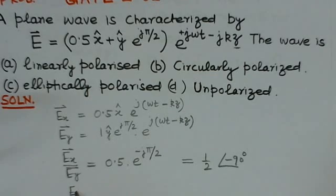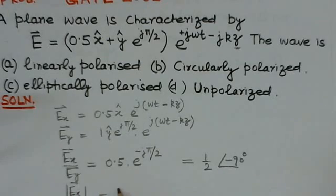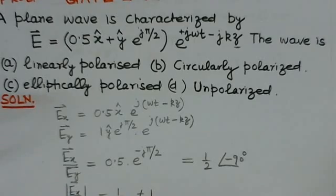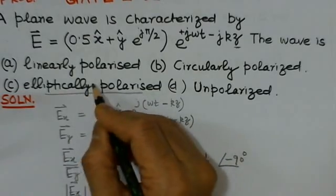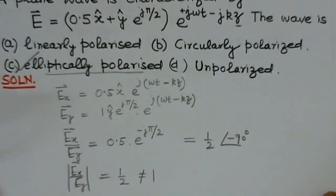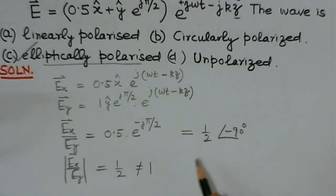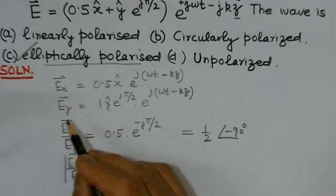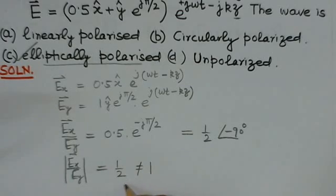What we find is that the ratio of the magnitudes of these components is one-half, which is not equal to 1. That means both amplitudes of the electric field in x and y directions are not the same. Since they are not the same, the wave is not circularly polarized — the wave is elliptically polarized. For circular polarization, the amplitude ratio of the electric field in x and y directions must be equal to 1. Since that ratio is one-half and not equal to 1, the wave is elliptically polarized, which is the correct answer.